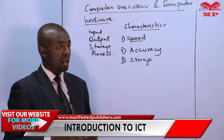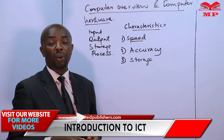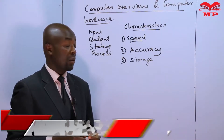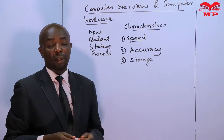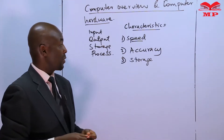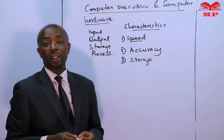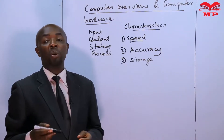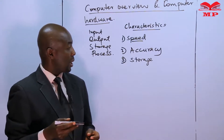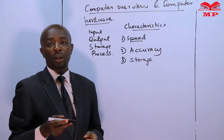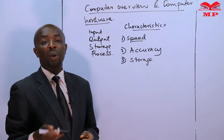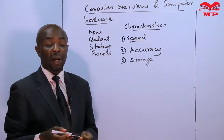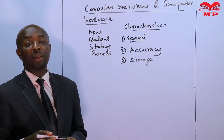Human beings easily forget. In storage, we have the primary storage and the secondary storage; here we are focusing on the secondary storage. Another characteristic of computers is what we call multitasking capability. Computers enable users to carry out a number of tasks. They can load many programs into memory and execute the programs at different intervals or at the same time.